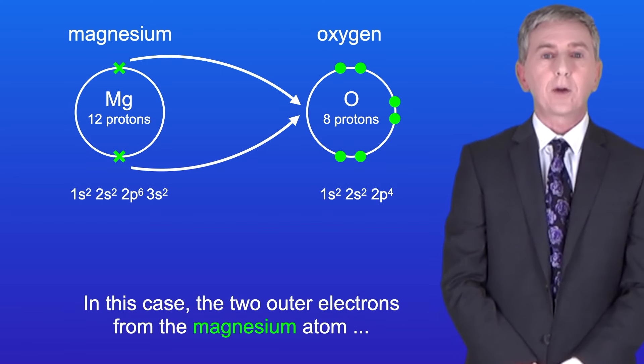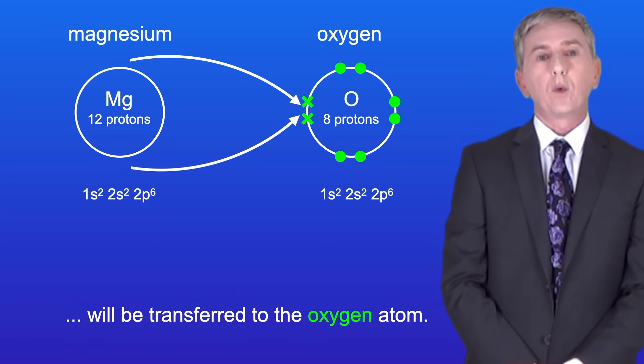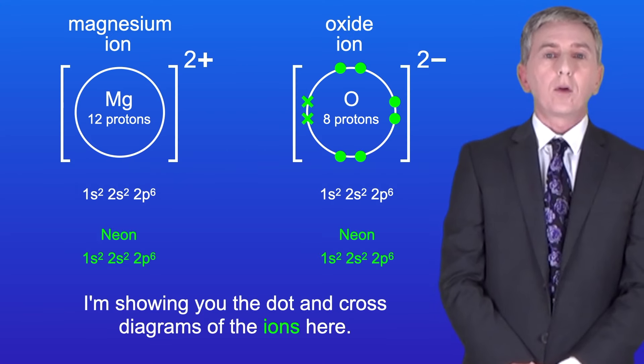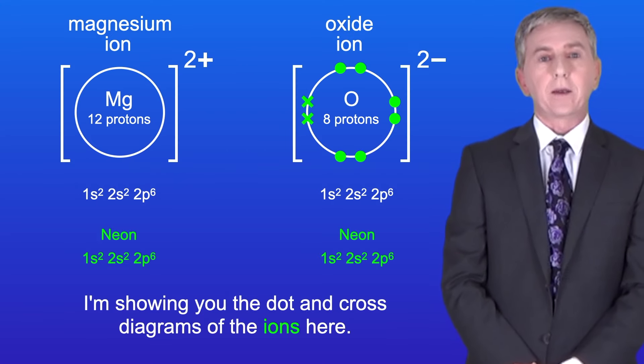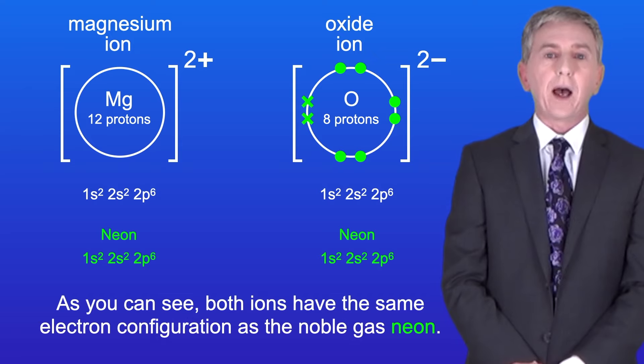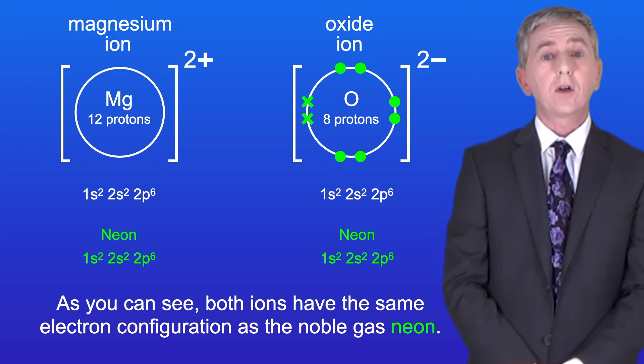Okay, in this case the two outer electrons from the magnesium atom will be transferred to the oxygen atom. I'm showing you the dot and cross diagrams of the ions here. And as you can see both ions have the same electron configuration as the noble gas neon.